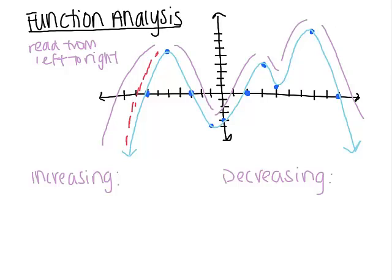So if I pick any place on this little section right here, the slope at any part of that section is a positive slope — it's going up. Other places that the function's increasing would be here, as well as over here. So I have three different intervals on which this function is increasing. We're going to write everything on an increasing or decreasing interval based on x-values, because x is the independent variable.